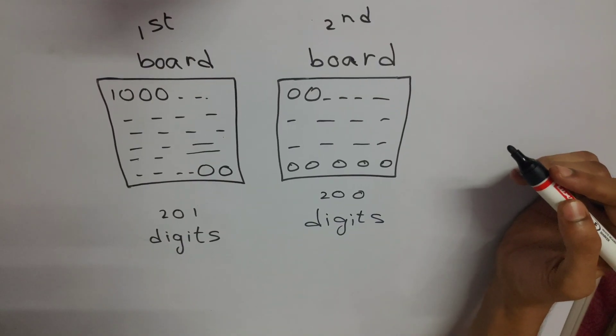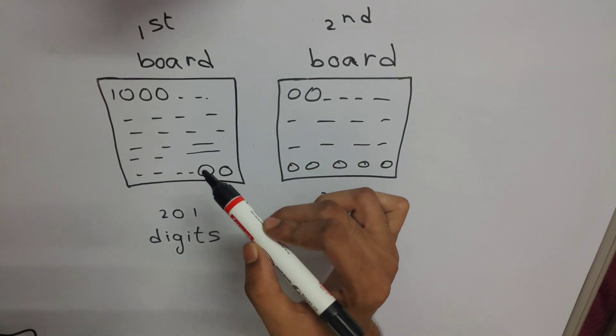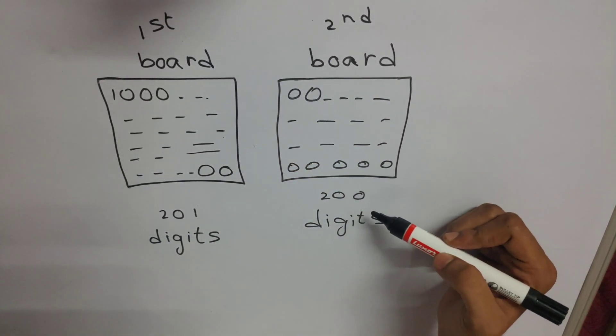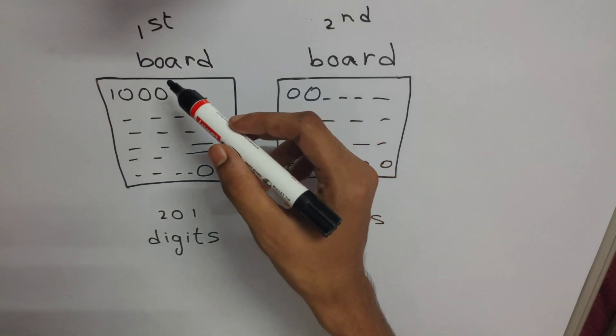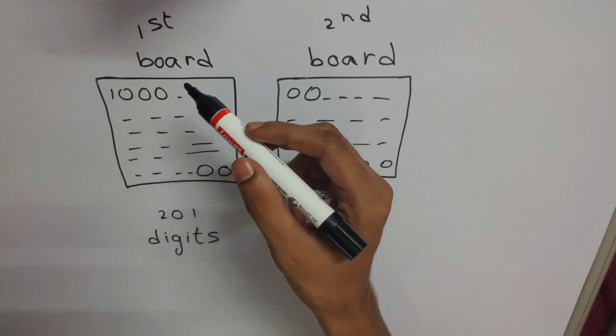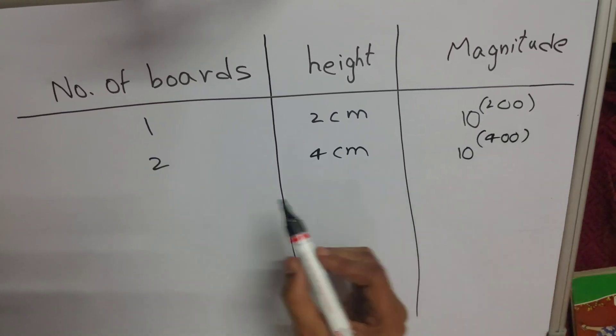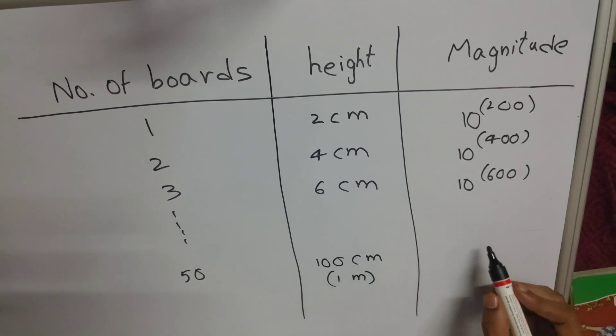A board which is 2 centimeters in height can hold up to 10 to the power of 200. Let us make a comparison between the height of the board and the magnitude of a number. Our first board contains 201 digits — 1 followed by 200 zeros — with magnitude 10^200. A second board contains 200 zeros, and placing both boards together gives a magnitude of 10^400. You can see this tabular form for various numbers of boards, heights, and magnitudes.